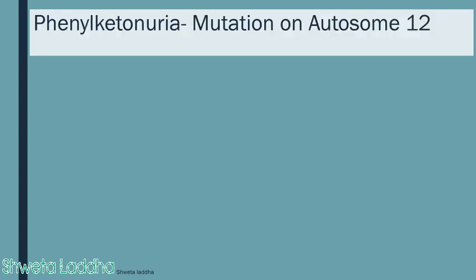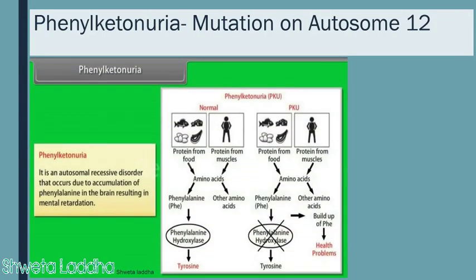Phenylketonuria (PKU) is a diseased condition caused by a mutation on autosome number 12. It is an autosomal recessive disorder which occurs due to accumulation of phenylalanine in the brain, resulting in mental retardation. Normally, when we eat protein foods, proteins are digested to form amino acids, one of which is phenylalanine. This amino acid is normally digested by the hepatic enzyme phenylalanine hydroxylase and converted into tyrosine.